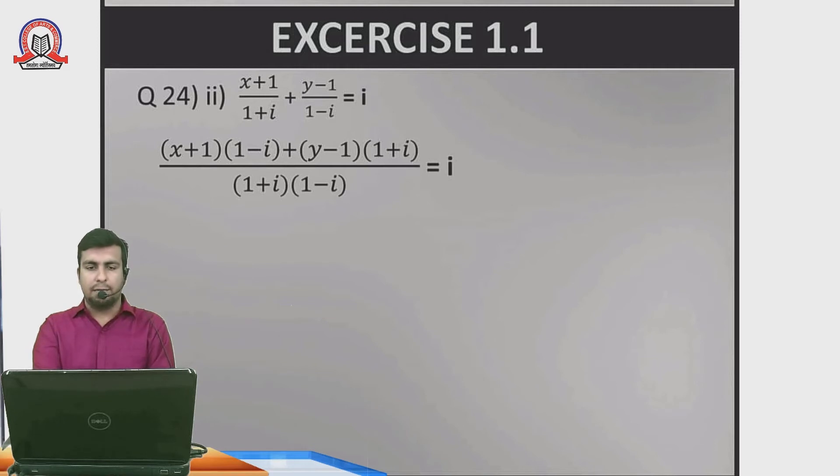Cross multiplying: (x plus 1)(1 minus i) plus (1 plus i)(y minus 1) equals i times (1 plus i)(1 minus i). Expanding the brackets: x minus xi plus 1 minus i plus y plus yi minus 1 minus i equals i. The denominator uses the formula a square minus b square.